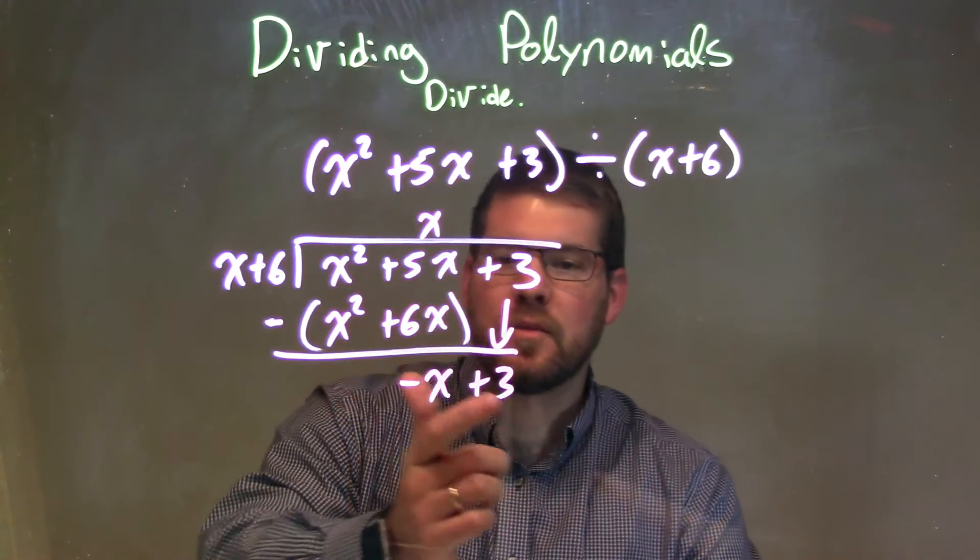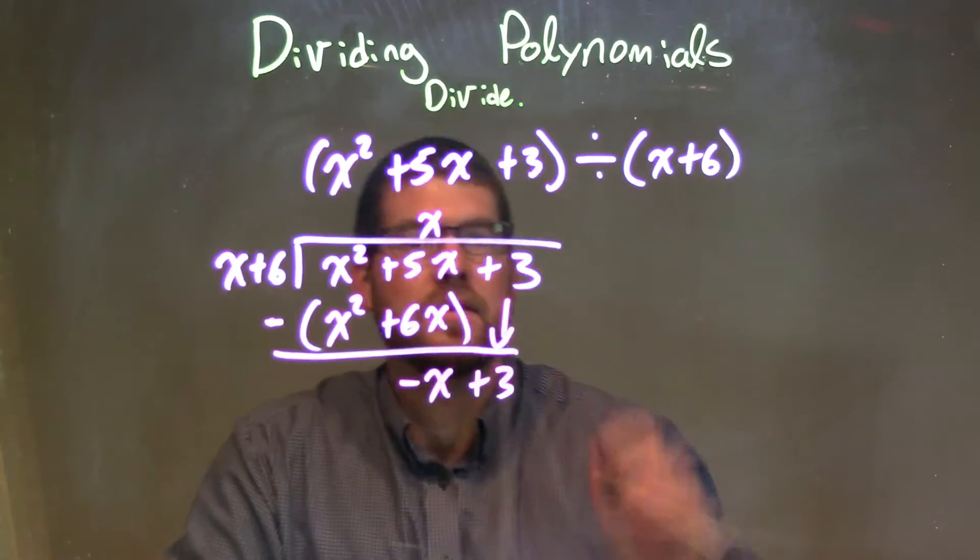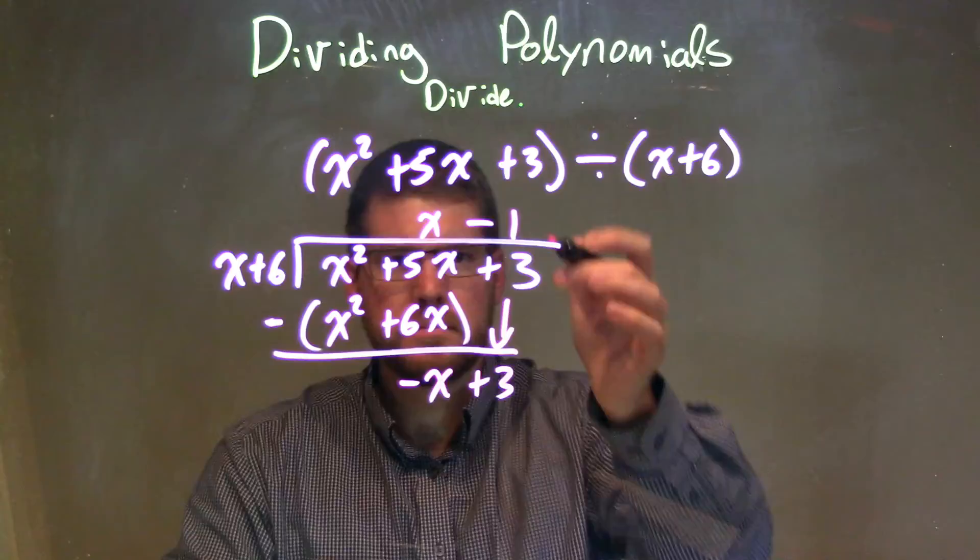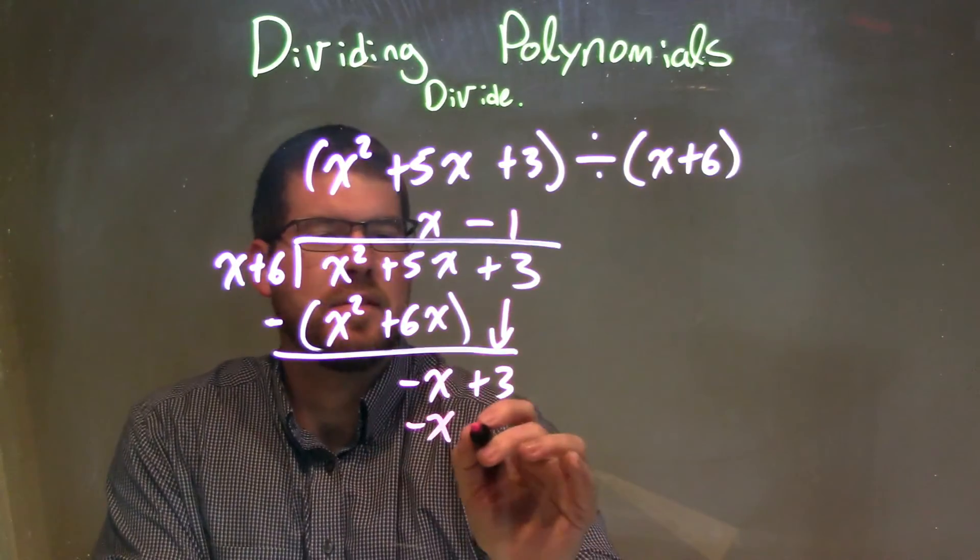So now we have a minus x plus 3. So we ask ourselves, what times x gives me minus x? And that's just minus 1, or negative 1, right? Negative 1 times x is a negative x. Negative 1 times 6 is a negative 6.